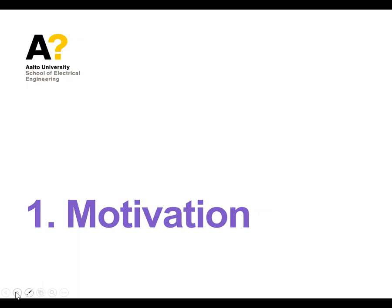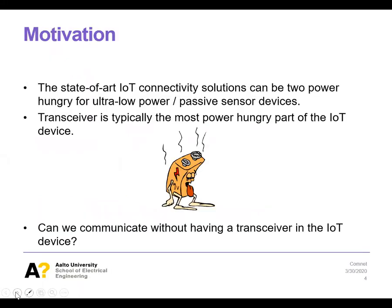Let's start from the motivation. If you look at IoT devices these days, one of the limiting factors is battery lifetime. There are already many wireless sensor systems promising over 10 years of battery lifetime, but that battery lifetime is very much dependent on the deployment — how far from the base station the device is and how often it is transmitting data. The aim of ambient backscatter communications is to transmit without actually having a transceiver.